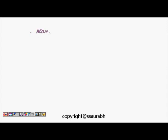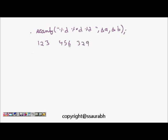Another feature is assignment suppression using the asterisk (*). For example, 'scanf("%d %*d %d", &a, &b)' with input 123, 456, 329 means the second value (456) is ignored because of the star, so a becomes 123 and b becomes 329.